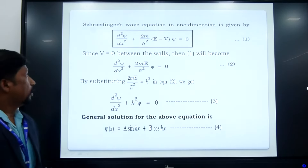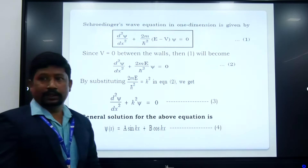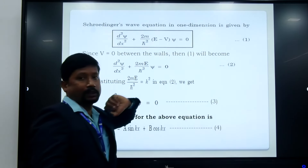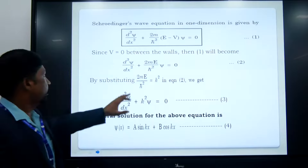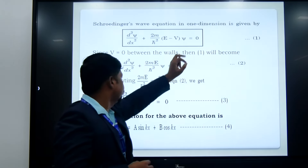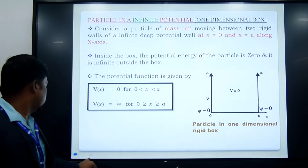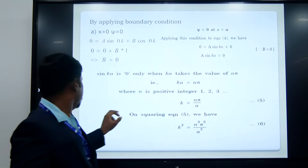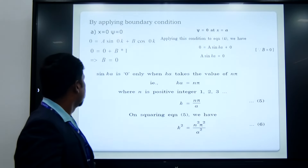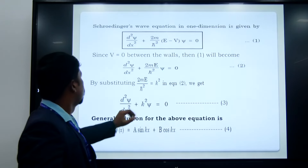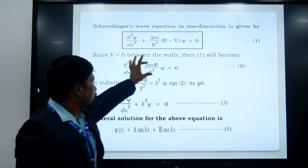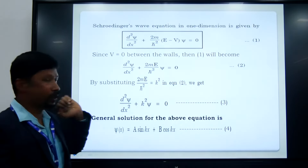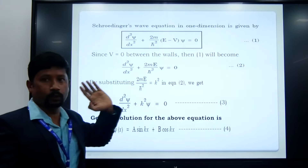Based on this, the Schrödinger wave equation in one dimension is given by d²ψ/dx² plus 2m by ħ² into (E minus V) into ψ is equal to 0. Here, V(x) is equal to 0, so substituting this in the first equation, we get d²ψ/dx² plus 2mE by ħ² into ψ is equal to 0. Instead of 2mE/ħ², we can take a constant k². Substituting this in the above equation, we get d²ψ/dx² plus k²ψ is equal to 0.